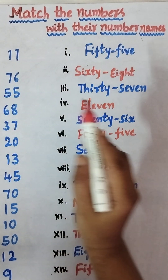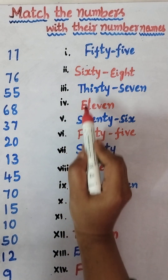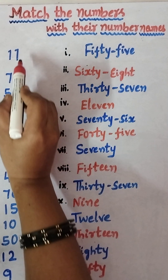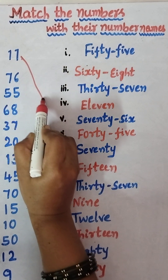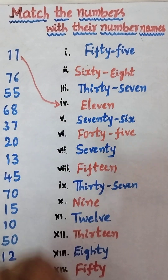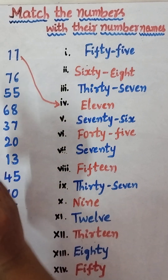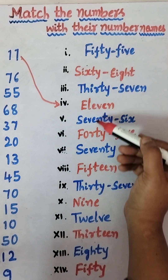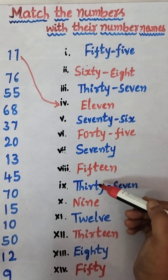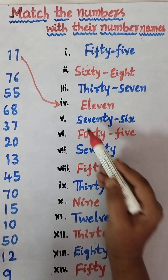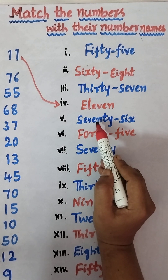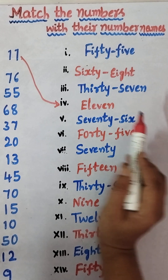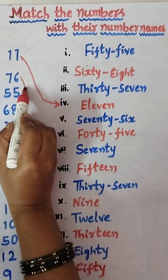11 — what is the spelling of 11? E-L-E-V-E-N, eleven. So we just have to match 11 to eleven. Next, 76 — the spelling of 76 is S-E-V-E-N-T-Y S-I-X, seventy-six. So we have to match 76 here.